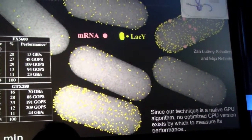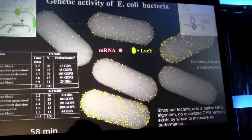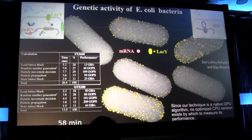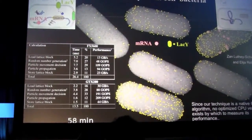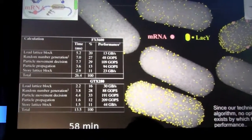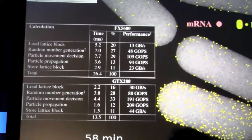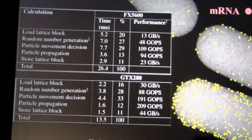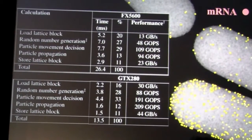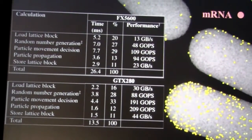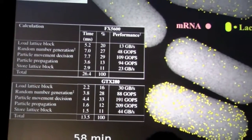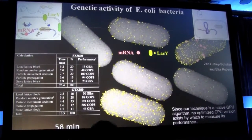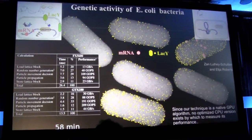Most importantly for GPU programmers, on the left side you see a table showing how effectively this calculation is done on the GPU — on an older model and a newer model. This calculation was actually done on the Lincoln cluster at NCSA, accelerated by GPUs. Without the GPUs, this project wouldn't exist. With them, we now have a new field that permits us to simulate entire cells.